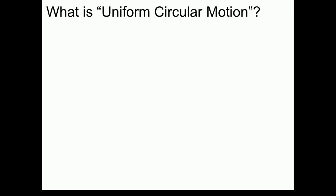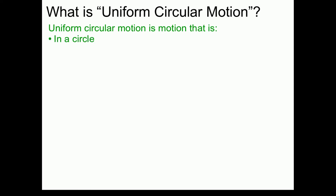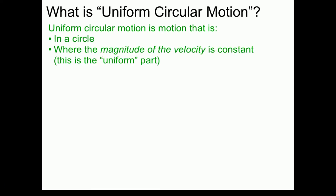The first term we're going to need is: what is Uniform Circular Motion? Uniform Circular Motion is motion that is, A, in a circle, and B, motion where the magnitude of the velocity is constant. This is the uniform part of the name.